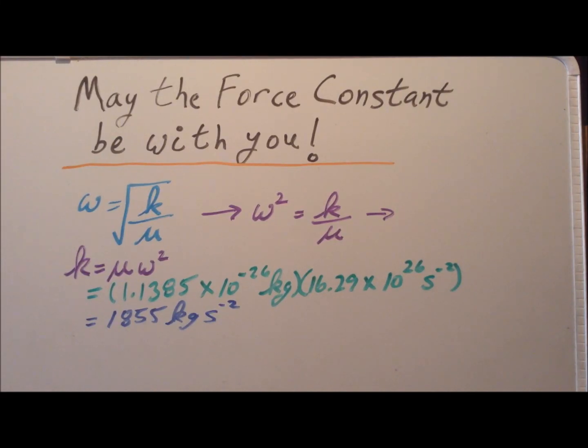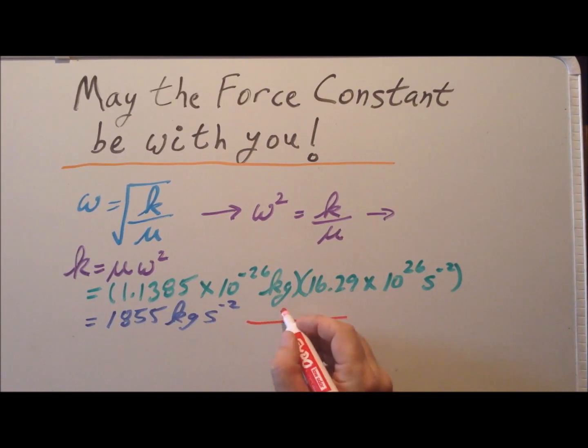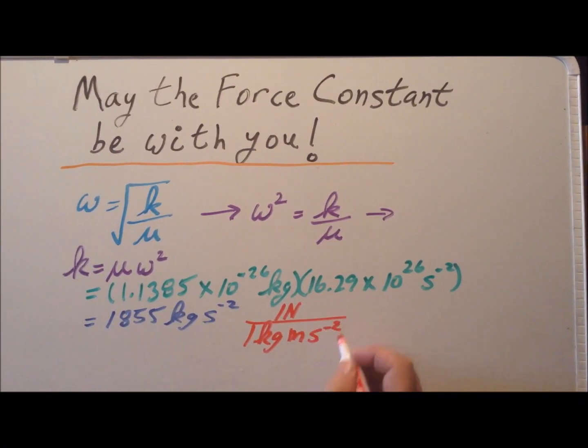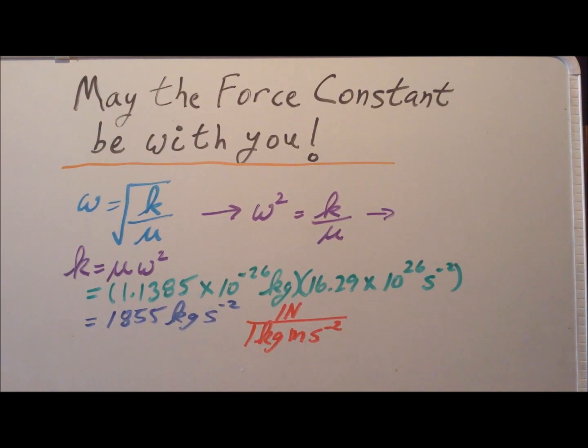We realize that kilograms per second squared are not units for force constants, so we need a unit conversion. Recall that one newton is one kilogram meter per second squared. The kilograms and inverse second squares cancel, leaving us with 1855 newtons per meter. This is the value of our force constant using SI metric system units.